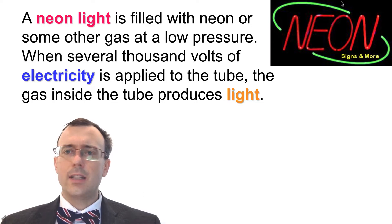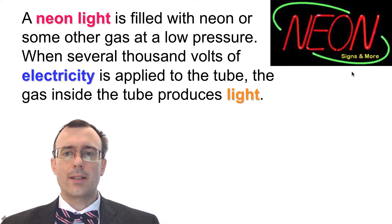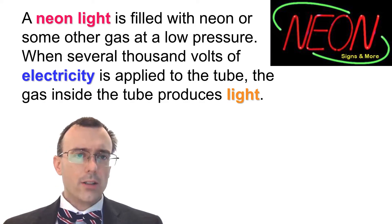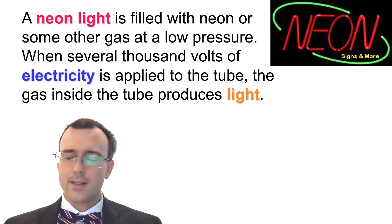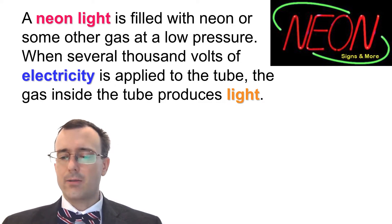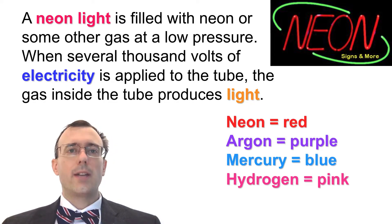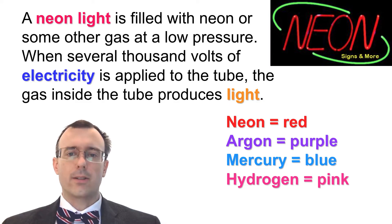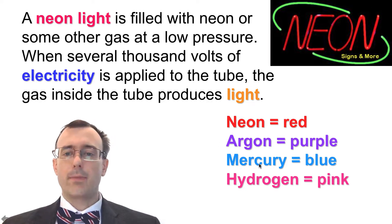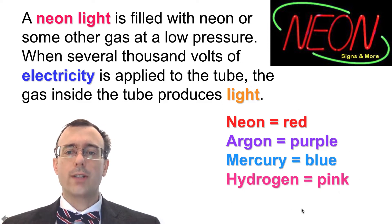Hopefully you've all seen neon lights and gas tubes like this sign here. Slowly they're becoming less used because LEDs are more versatile. The color of a neon light depends on the gas inside — not all neon lights are filled with neon. Neon itself produces a very bright red color. Argon makes a purple light, mercury makes a bright blue light, and hydrogen produces pink. All different gases produce different colors.